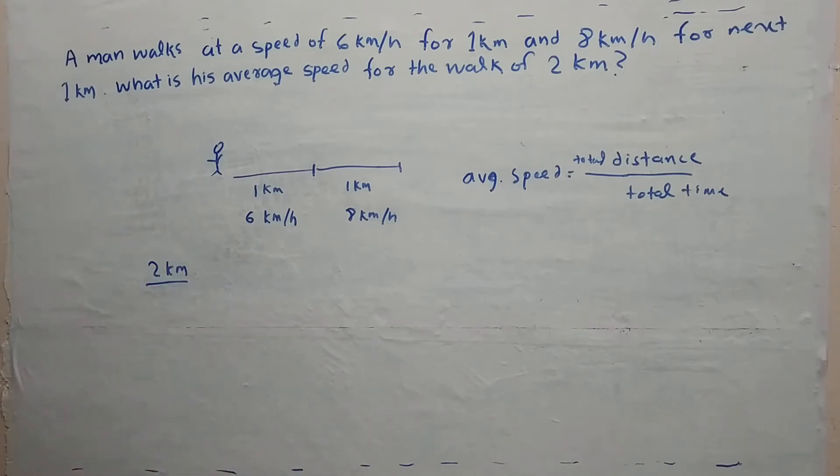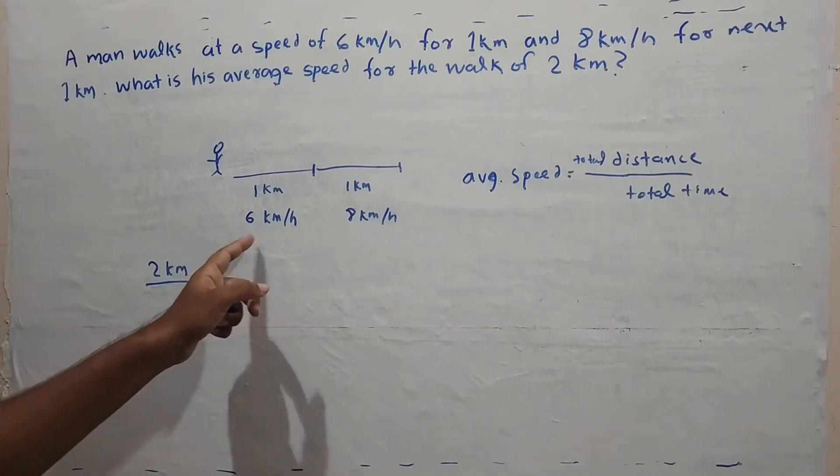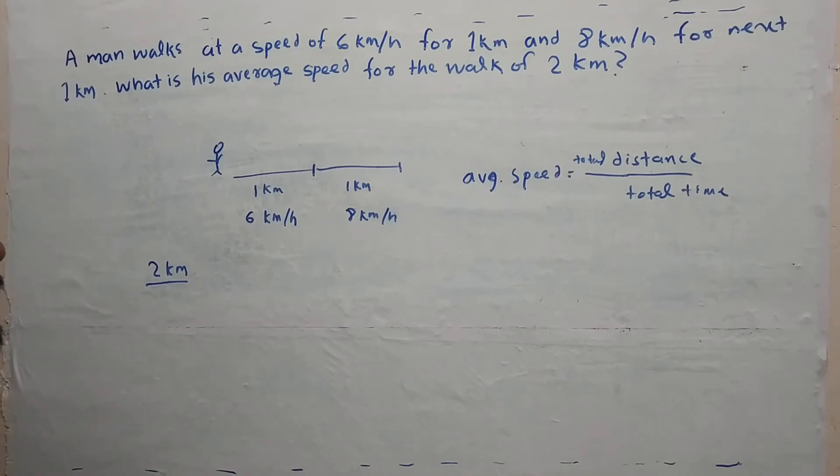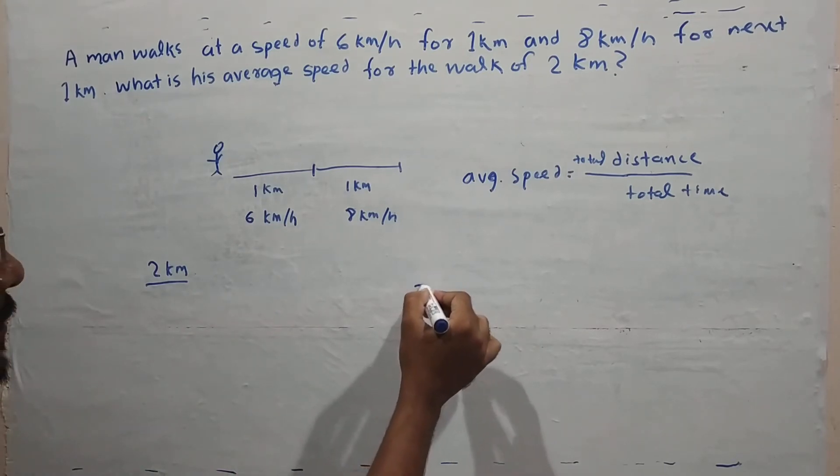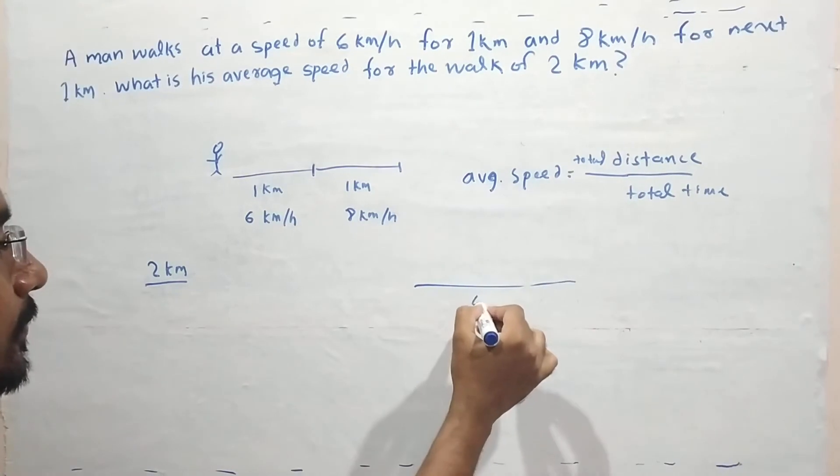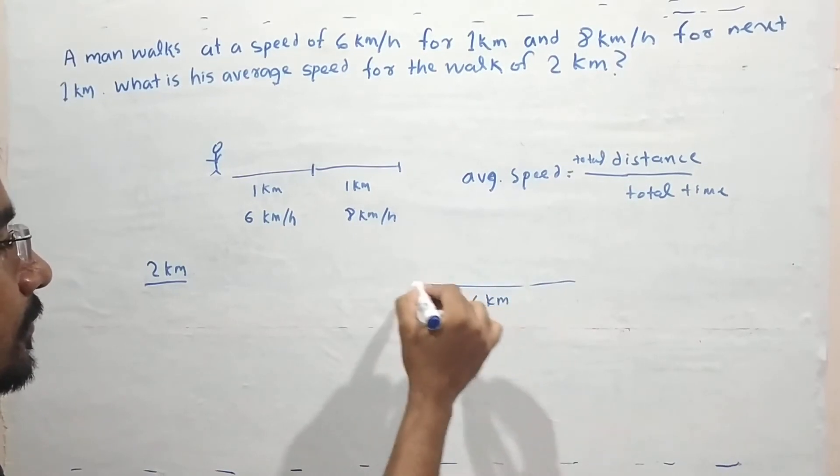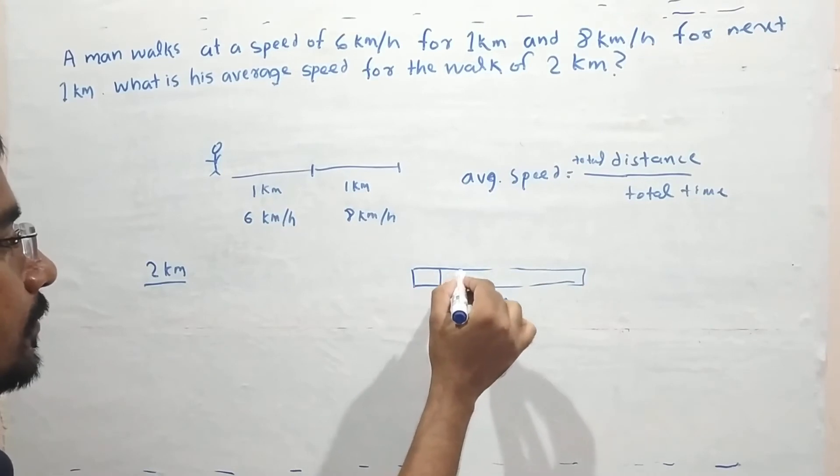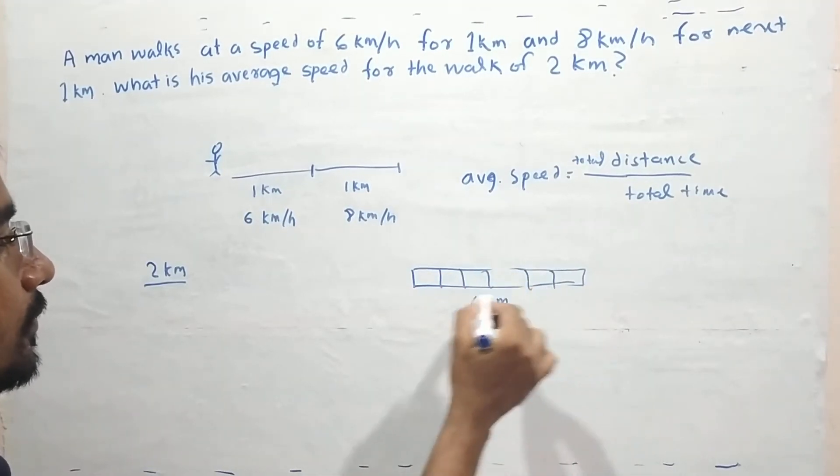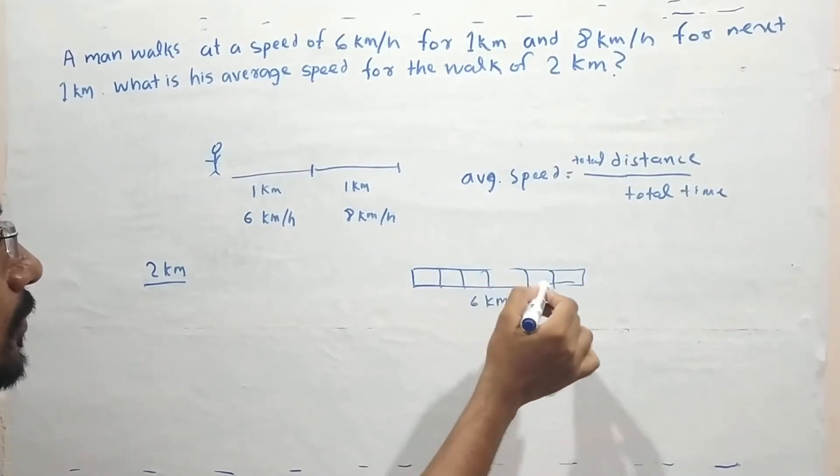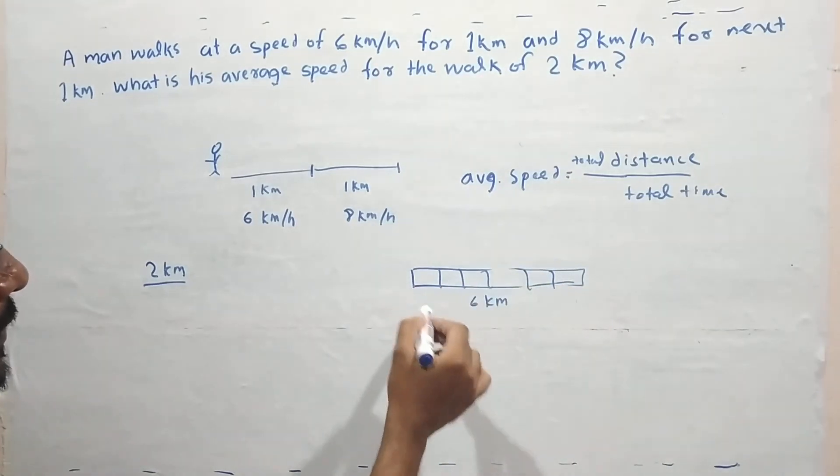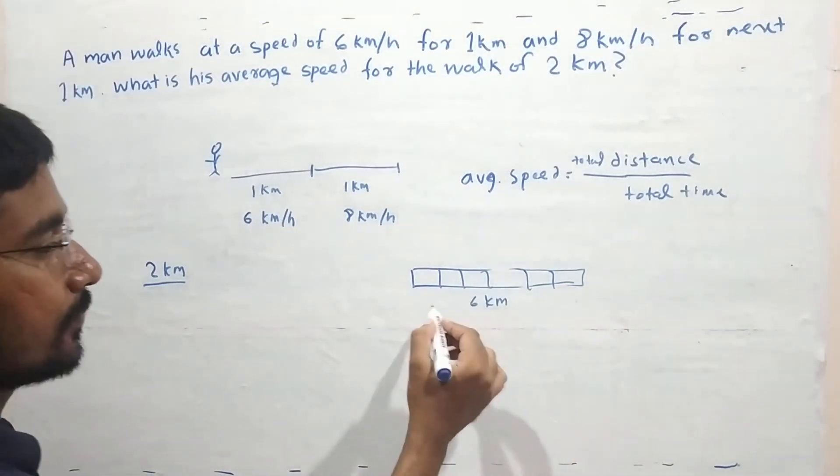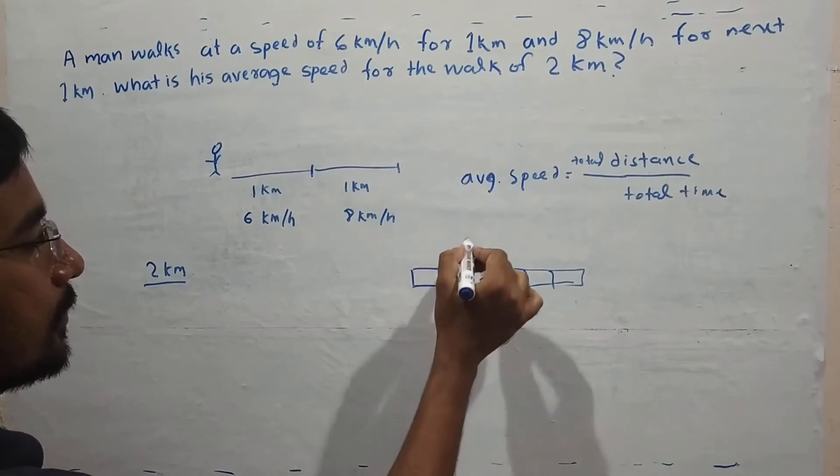At 6 km per hour, that's 6 km in 1 hour.